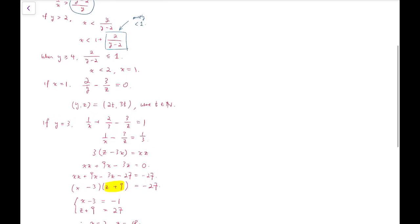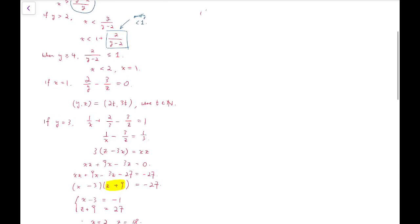After that, I'm going to go back to the cases when y is equal to 2 and 1. If y equals 1, then the original equation becomes 1 over x plus 2 minus 3 over z equals 1.